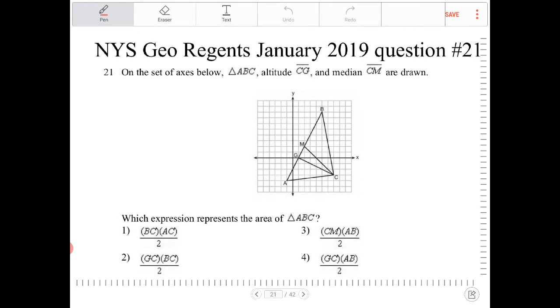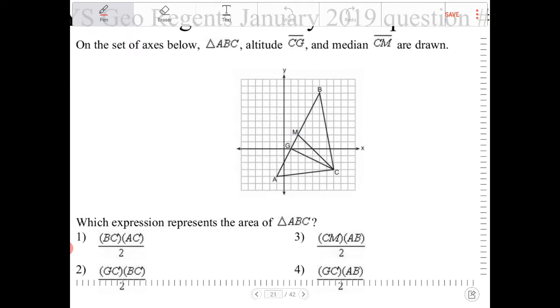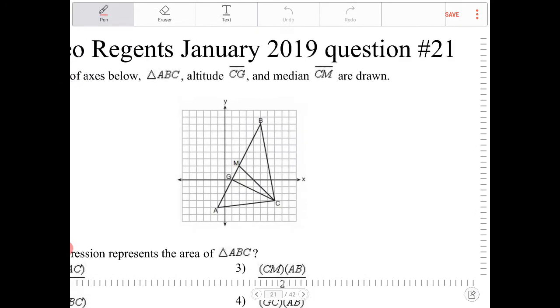So let's try to be clear here. Altitude CG. Okay, so to find the area of a triangle, we need to multiply one half of the base times the height, and the height is our altitude.